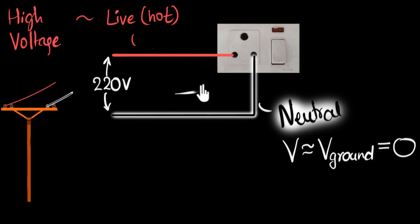That means if the current is flowing in this direction, then this wire must be having a higher voltage compared to the ground. We usually call that as the positive voltage.